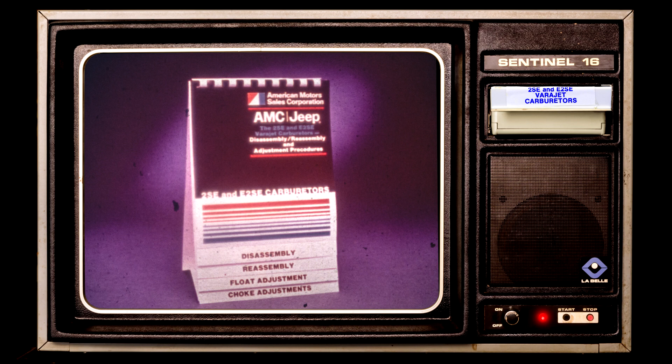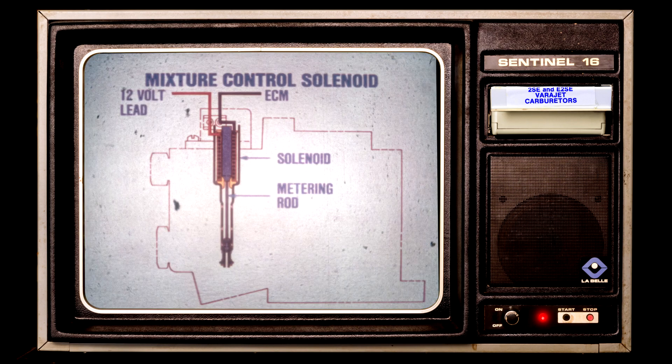The bench chart contains all service adjustments for both carburetors plus complete disassembly and reassembly steps. The mixture control solenoid, in response to an electrical signal from the electronic module, actuates a spring-loaded metering rod. This rod controls the fuel flow to the main metering circuit, the power enrichment circuit, and the idle circuit.